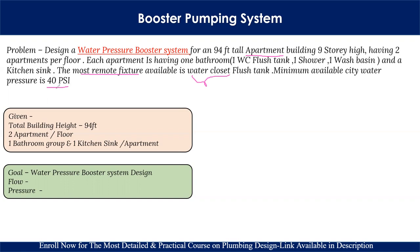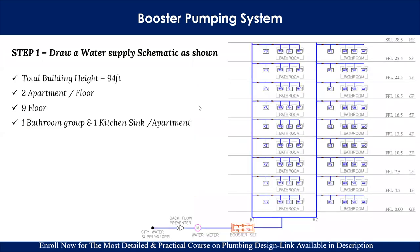The parameters given are: total building height is 94 feet, two apartments per floor, and one bathroom group and one kitchen sink per apartment. Our goal is to design the flow and pressure requirements of the water booster system. We'll understand this complete process step by step. Step one is to draw a schematic.